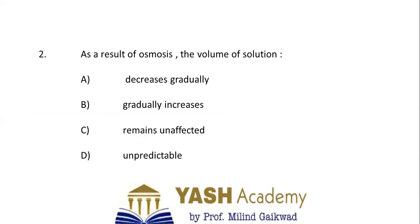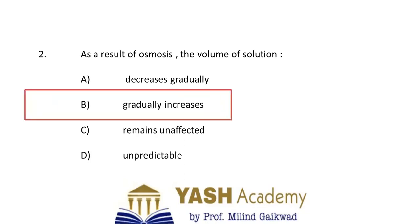Second question: as a result of osmosis, the volume of solution — A. Decreases gradually, B. Gradually increases, C. Remains unaffected, or D. Is unpredictable. You know that osmosis is nothing but unidirectional flow of solvent molecules, so the volume of the solution gradually increases. Correct answer is B.